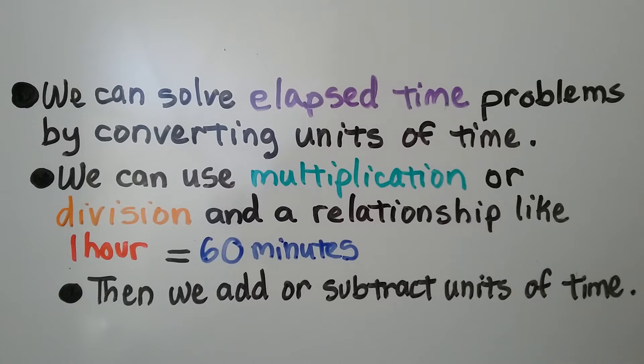We can solve elapsed time problems by converting units of time. We can use multiplication or division and a relationship like one hour is equal to 60 minutes. Then we add or subtract units of time.